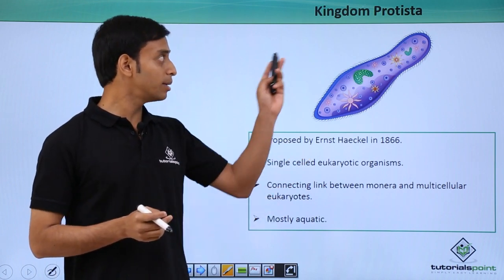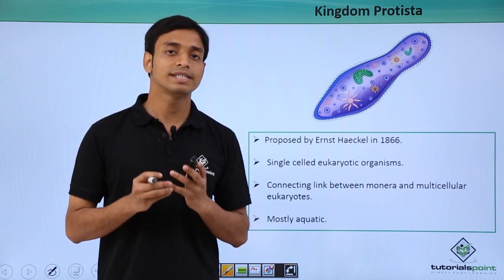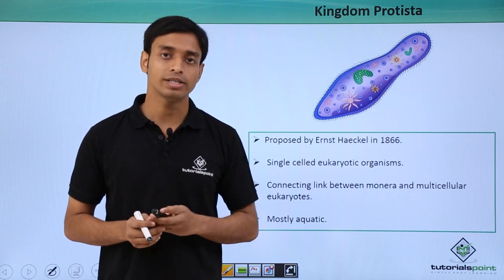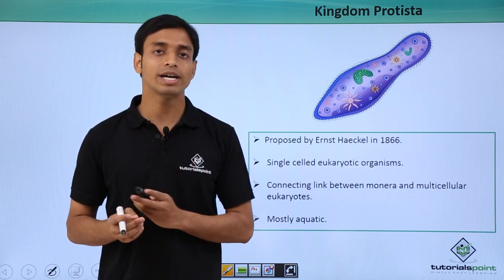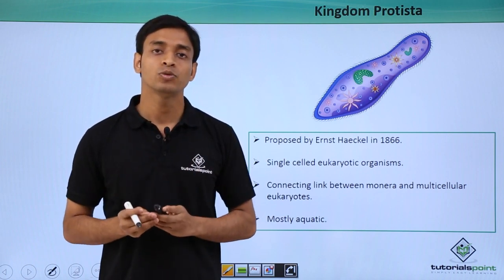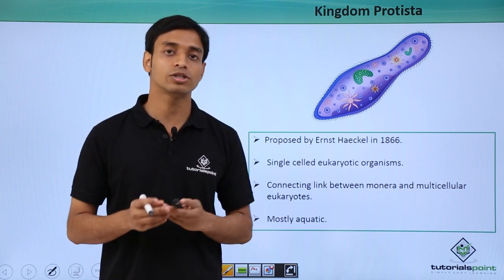These Protista are mostly aquatic in nature, so they are found in seas, rivers, fresh waters, and also in moist soils. At times some groups of Protista can be found as plankton. In fact, there are some groups of Protista which can remain as parasites in bodies of animals.